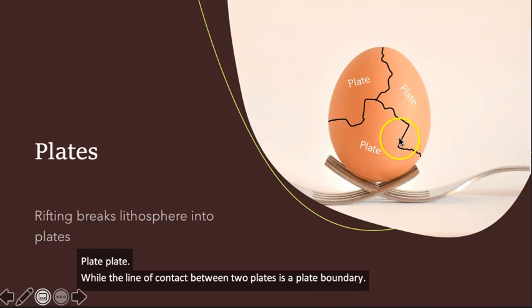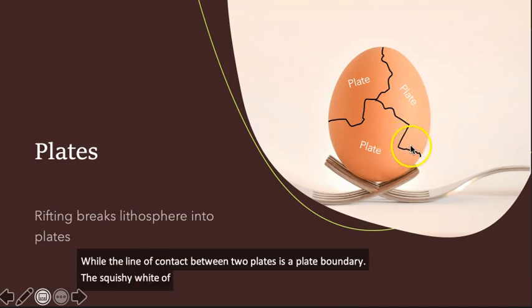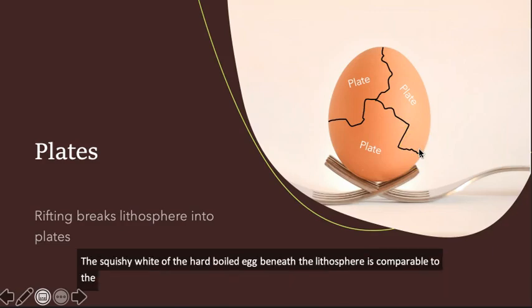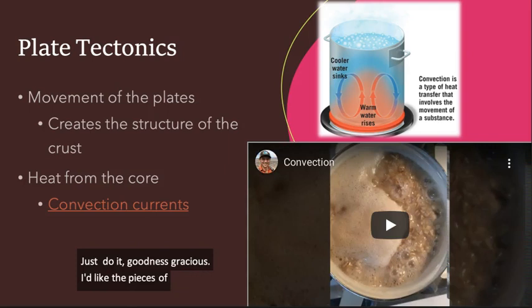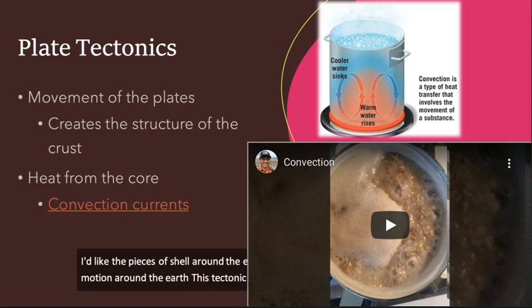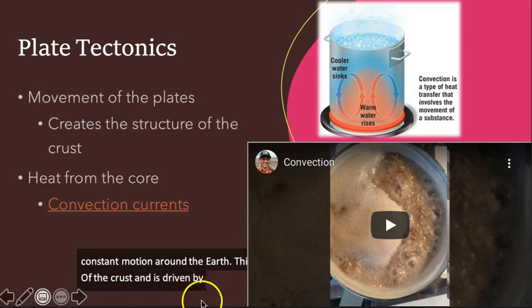While the line of contact between two plates is a plate boundary. The squishy white of the hard-boiled egg beneath the lithosphere is comparable to the asthenosphere. Unlike the pieces of shell around the egg, the lithospheric plates are in constant motion around the Earth.